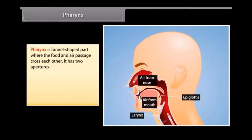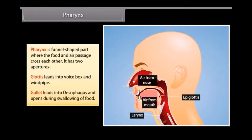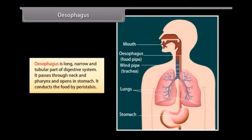Pharynx is a funnel-shaped part where the food and air passages cross each other. It has two apertures: glottis, which leads into the voice box and windpipe; and gullet, which leads into the esophagus and opens during swallowing of food. Esophagus is a long, narrow and tubular part of the digestive system. It passes through the neck and thorax and opens into the stomach, conducting food by peristalsis.